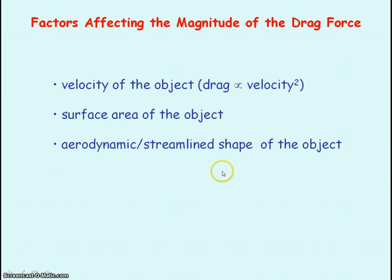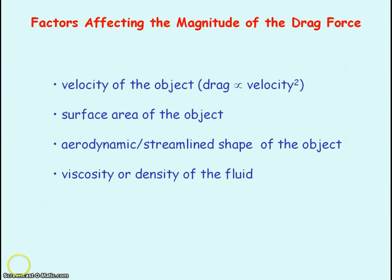Another factor is the shape of the object. If the object has an aerodynamic or streamlined shape, it will experience less drag. A skydiver wanting to reach a higher terminal velocity would need to reduce drag by forming a streamlined shape — falling vertically head first with arms tight by his sides — and could also reduce surface area by wearing tight-fitting clothes. The final factor is the viscosity or density of the fluid: a fluid with higher viscosity — thicker, more viscous — will produce a greater drag force.